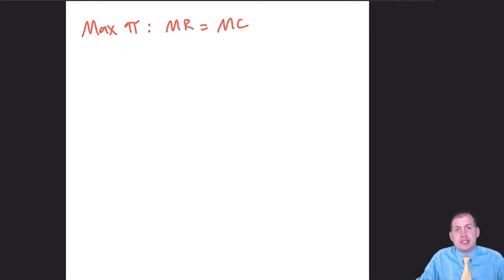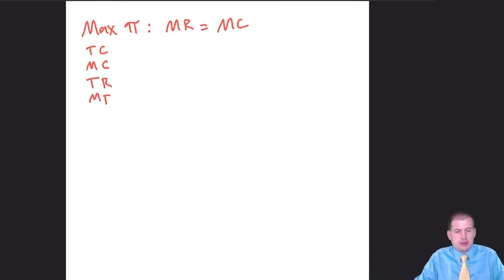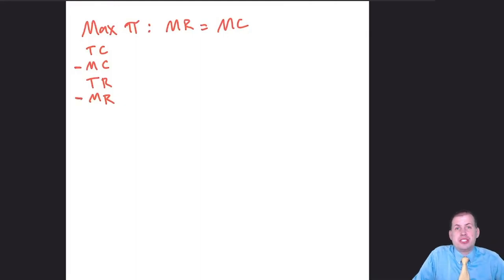Our main goal is to maximize profit — we use the PI symbol for profit. To maximize profit we find where marginal revenue equals marginal cost, and wherever those two things are the same is the best quantity to produce. In order to do this, we need to calculate four things: a formula for total cost, marginal cost, total revenue, and marginal revenue. Once we have all four, we set MR equal to MC and find the ideal quantity.